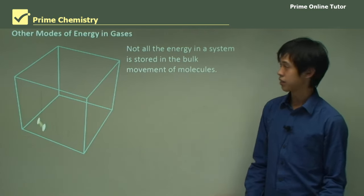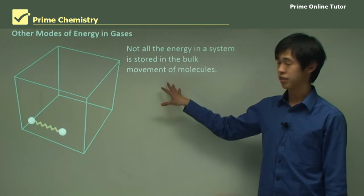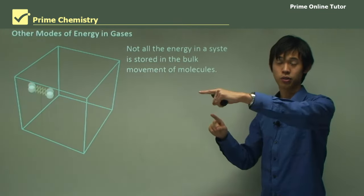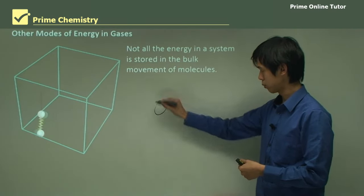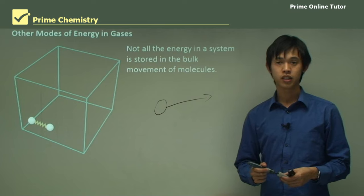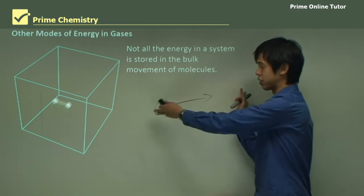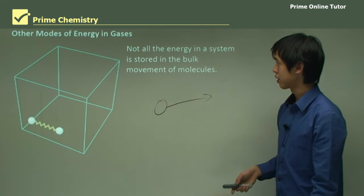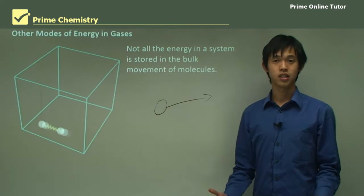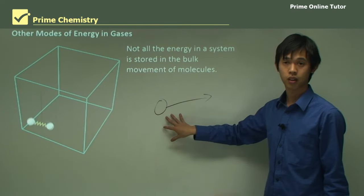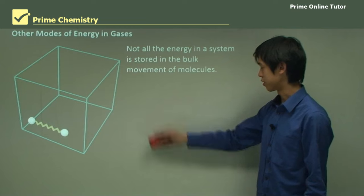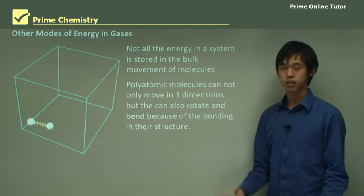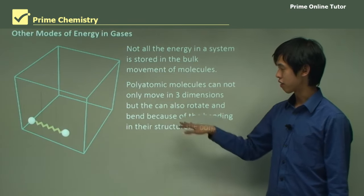Now we'll talk about other modes of energy in gases. We've been talking about what's called translational energy — a molecule traveling in a direction, where movement from here to there is its energy. But not all the energy in a system is stored this way. There are many ways a molecule can store its energy. A polyatomic molecule can move in three directions — three dimensions — so it can go left/right, into the board or out of the board, and up and down.